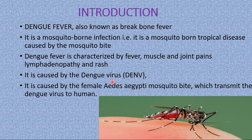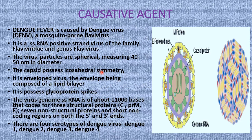The characteristic features of dengue fever are: number one, fever; muscle and joint pains; lymphadenopathy; and rash.